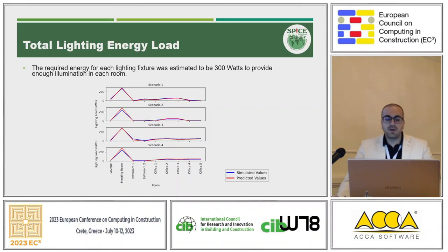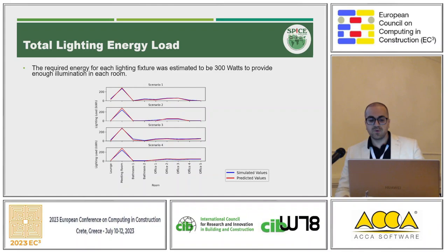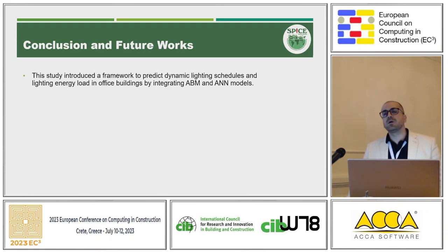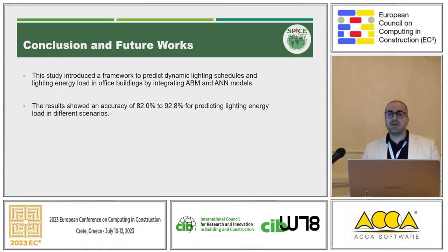These are the results of lighting electricity consumption based on the neural network. Although the profile load results are not very promising, the prediction of total lighting energy consumption almost matches between the neural network and the agent-based model. So we used an agent-based model to simulate a dynamic occupancy schedule, then modeled building lighting energy consumption with and without occupancy sensors, and used a neural network to predict these values without simulation for any building instead of modeling each building individually.